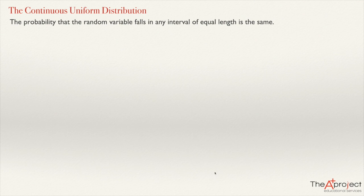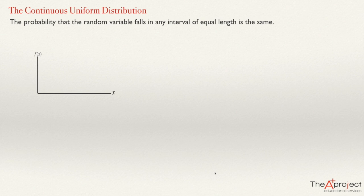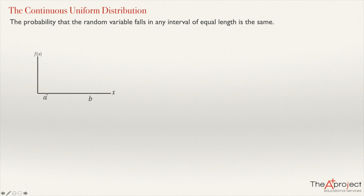What is the main characteristic of this continuous uniform distribution? The probability that the random variable falls in any interval of equal length is the same. To graph the probability density function, we need the Cartesian plane. There is a lowest value for the variable — let's call it A — and a highest value — let's call it B. If we make a histogram, the rectangles will all have the same height, because the probability of falling in any equal-length interval is the same.